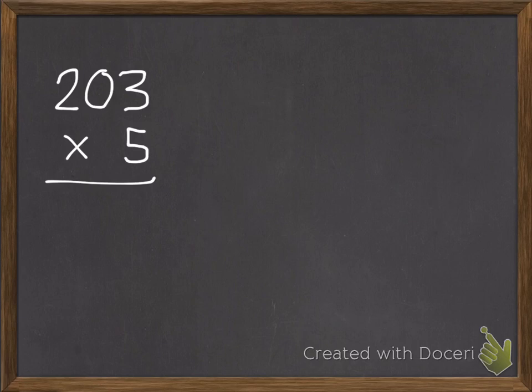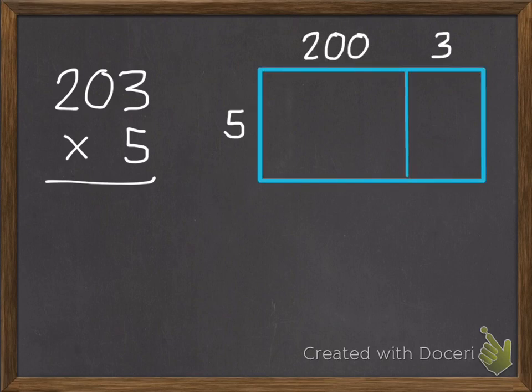We can still use our strategies such as making an area model, which I'm going to do. Since we don't have any tens, even though we're into the hundreds, we can just use the distributive property to make that 203. We don't need a spot for the tens.